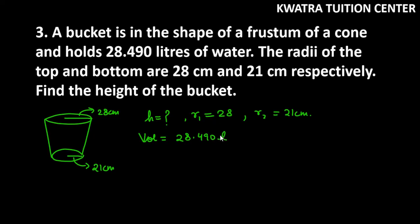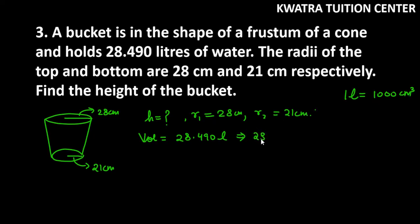Since the volume is given in litres but R1 and R2 are in centimetres, we need to convert litres into cm³. You must know that 1 litre equals 1000 cm³, so we multiply 28.490 by 1000.